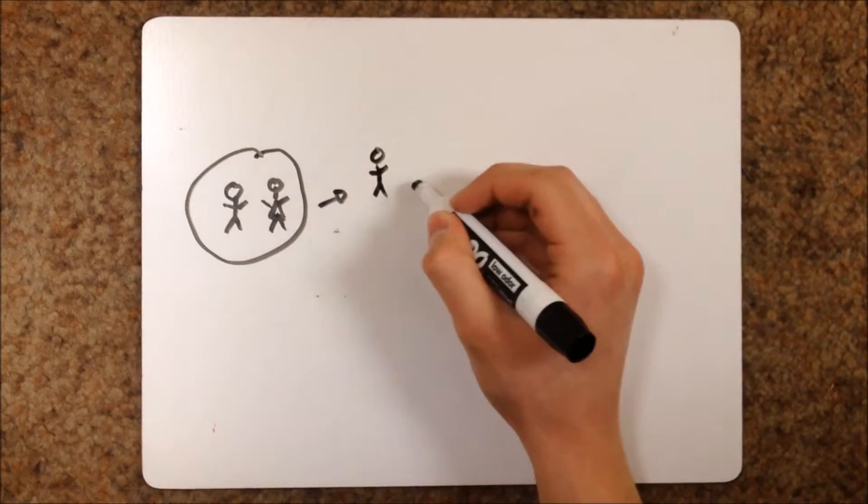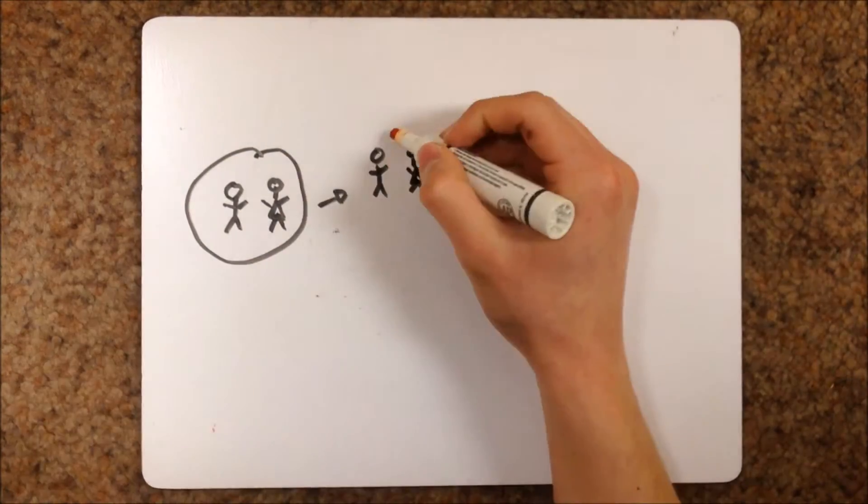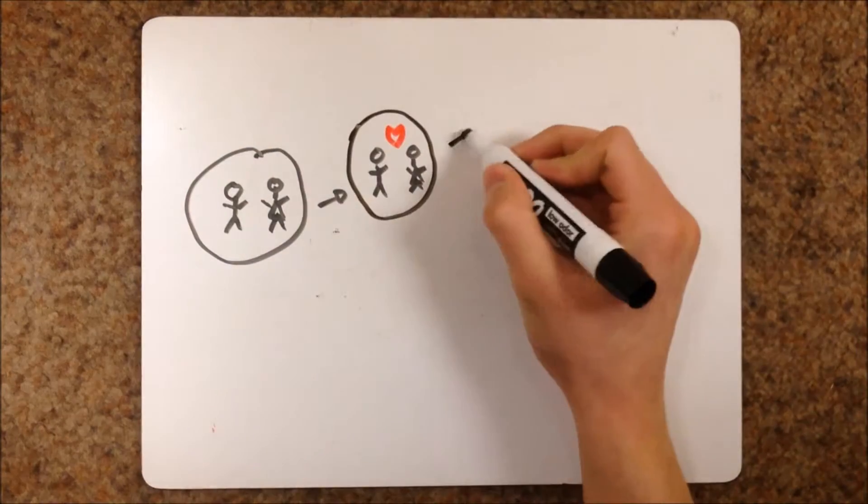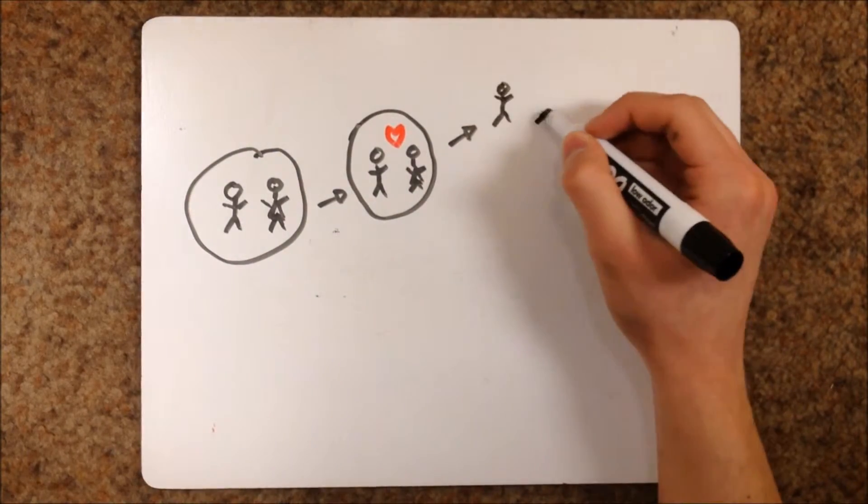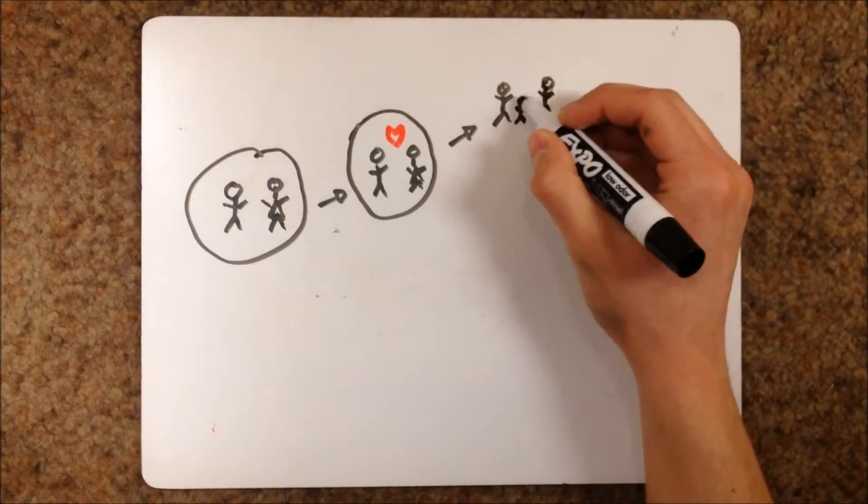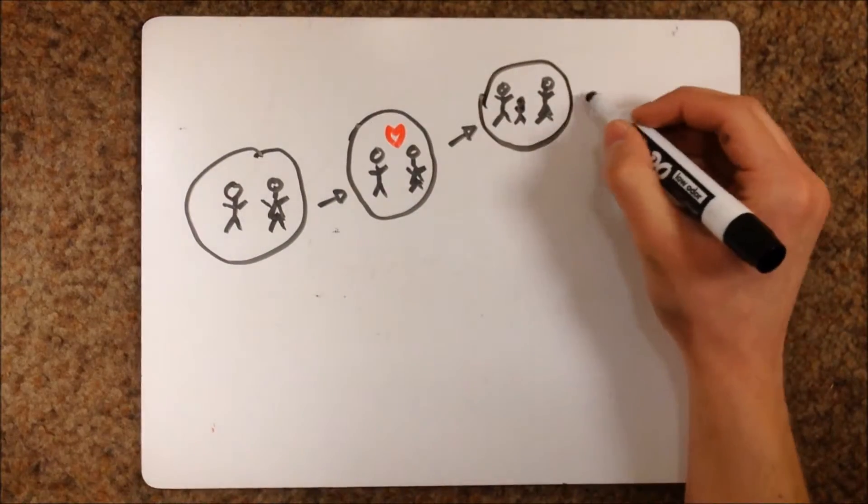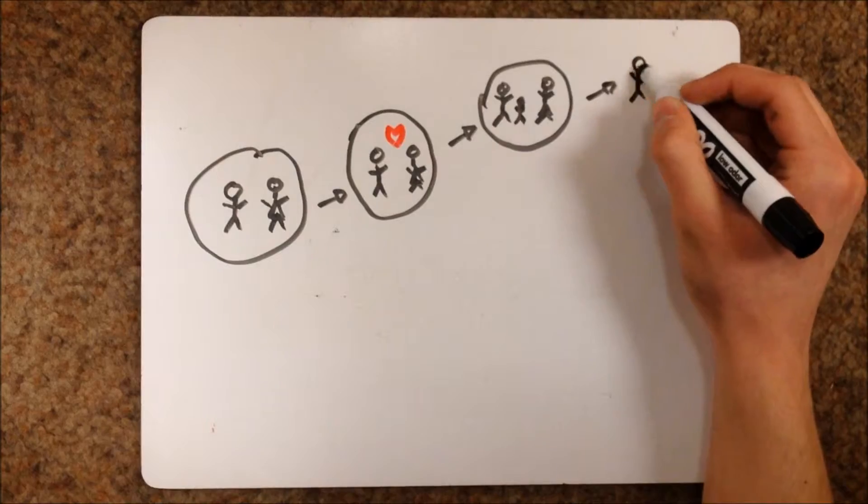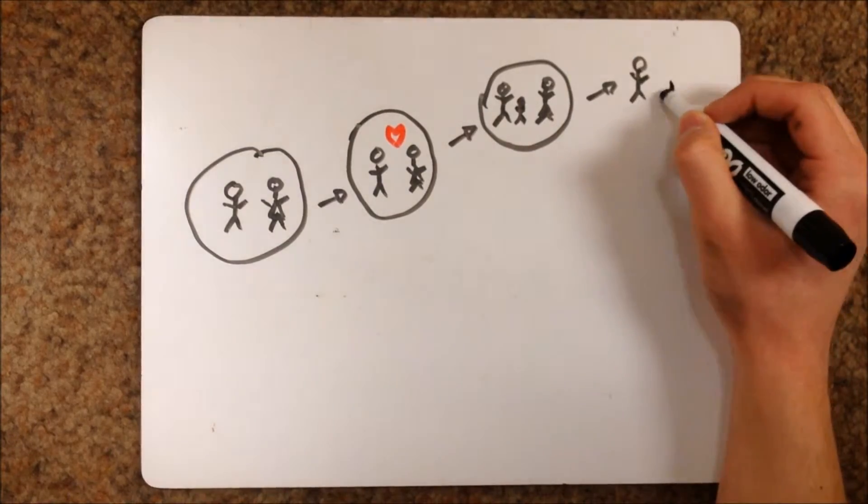It could be love at first sight. Maybe John marries Susie and they start a family. Then John and Susie grow old together and live happily ever after.